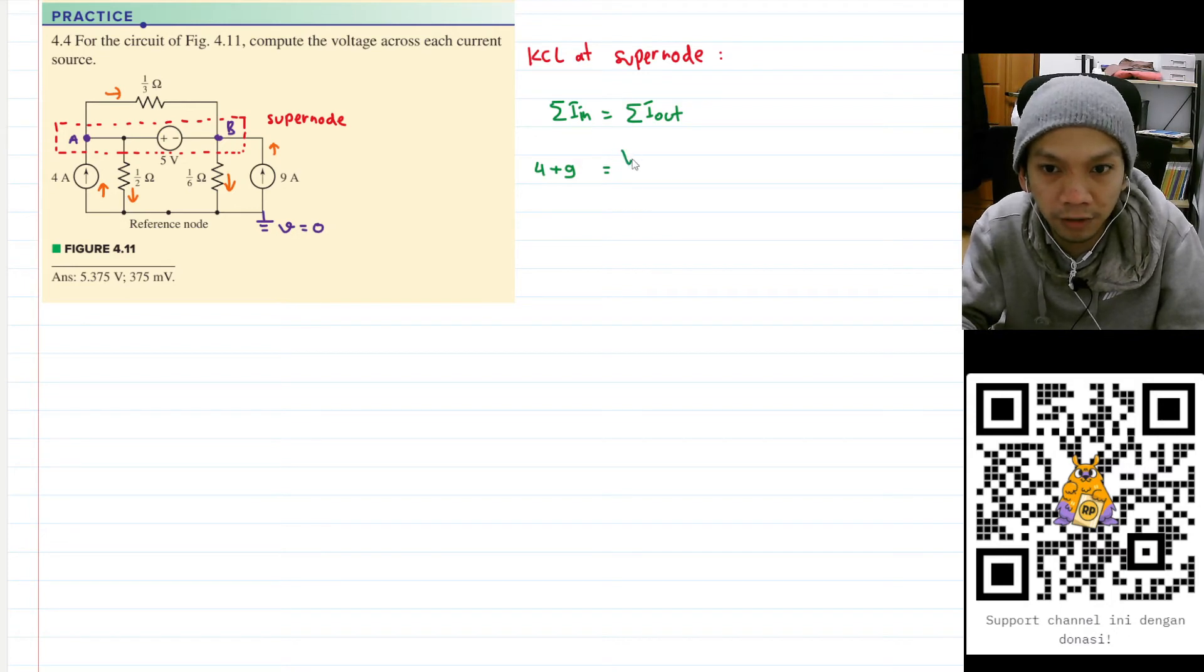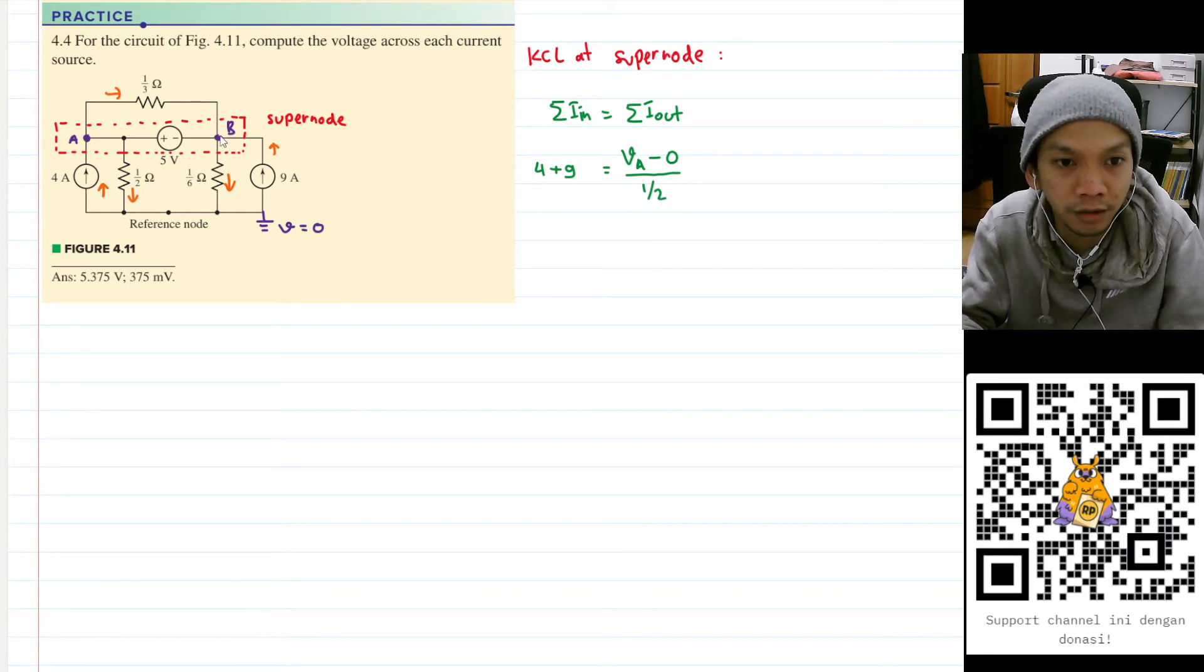The current that goes out will be this one here, and that means that we have VA minus zero divided by the resistance between them, so I will have one over two. And for this one I will have plus VB minus zero divided by the resistance between them, which is one over six.